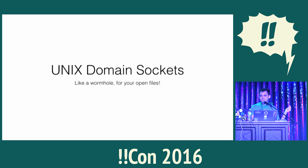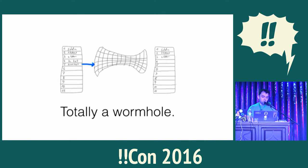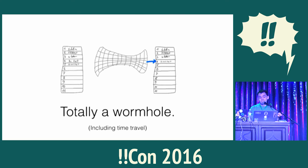Unix domain sockets work only on the local system, never across a network, and because of that you're guaranteed to get every message out the other end that you send, always in order. They're also kind of a wormhole — they let you send files from one process to another. Basically, you send a message containing out-of-band data with control messages mentioning those file descriptors, and out the other end the process reads that message and immediately has the file descriptor on its file table. Interestingly, the sending process could close that file before the receiving process picks it up — it's kind of like time travel.